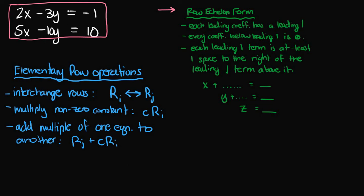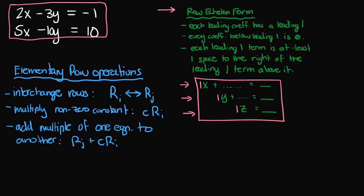Row echelon form is a very special form that a system of linear equations is written in so that it makes back substitution very easy. Each leading coefficient of each equation written in row echelon form has a leading one term — the leftmost term of each equation has a coefficient of one. So in the first equation we have one times x, in the second one times y, and in the third one times z. Every term below these leading ones has a zero coefficient, so the diagonal consists of all leading one terms.